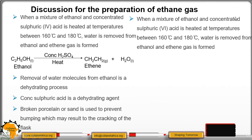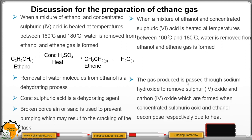When a mixture of ethanol and concentrated sulfuric acid is heated at temperatures between 160 degrees Celsius and 180 degrees Celsius, water is removed from ethanol and ethene gas is formed. The gas produced is passed through sodium hydroxide to remove sulfur dioxide and carbon dioxide which are formed when concentrated sulfuric acid and ethanol decompose respectively due to high temperatures.